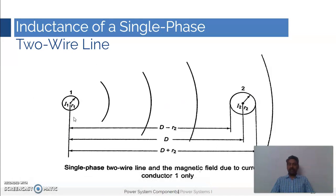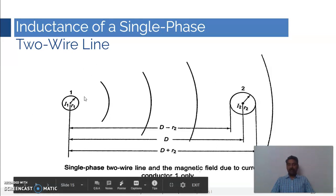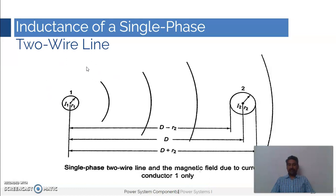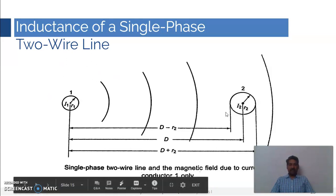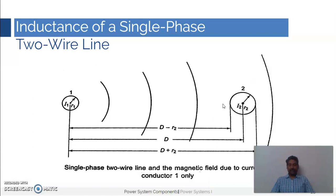When you consider the current flowing through conductor one, which is i1, and the flux linkages because of this current — the reason why we are not considering the flux linkages produced by i2 right now is: when you assume there are no other flux linkages due to other currents, you can assume the flux produced by conductor one or current i1 as circular. That is the reason why we are not considering the effect of i2 right now.